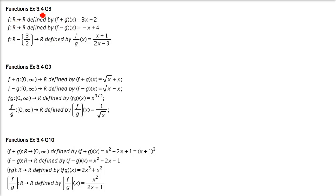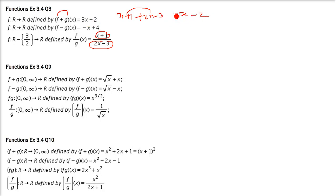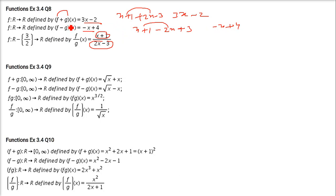Next in exercise 3.4: f(x) = x + 1 and g(x) = 2x − 3. So f plus g(x) = (x + 1) + (2x − 3) = 3x − 2. There is no problem with the domain because any real number can be put in x + 1 or 2x − 3. For f minus g: (x + 1) − (2x − 3) = x + 1 − 2x + 3 = −x + 4. So f − g = −x + 4.